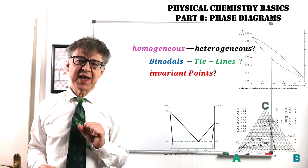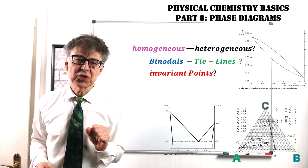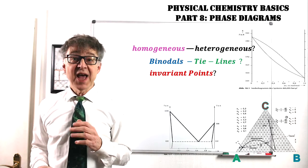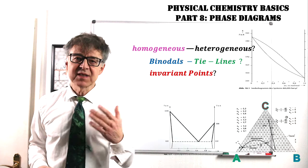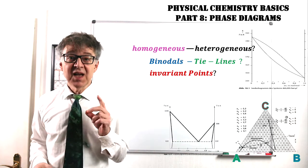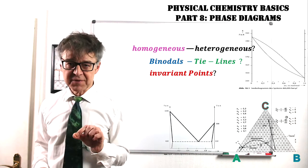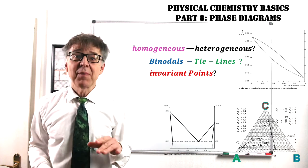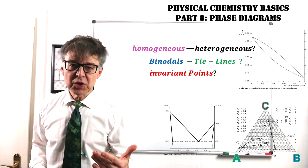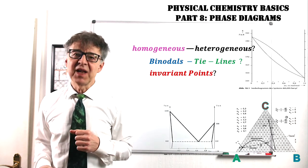The Gibbs phase triangle has proven useful for the illustration of three-component mixtures. Again, there may be binodals and tie lines in this diagram. A tie line not only tells us the composition of the phases in the heterogeneous region, but also their quantity ratio. We have to apply the lever rule.